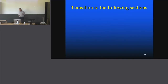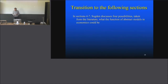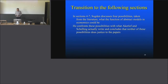The transition to the following sections: after Sugden has exposed the problem with these two examples, in sections 4 to 7, Sugden discusses four possibilities taken from the literature about what the function of abstract models in economics could be.